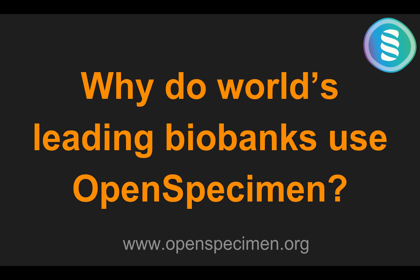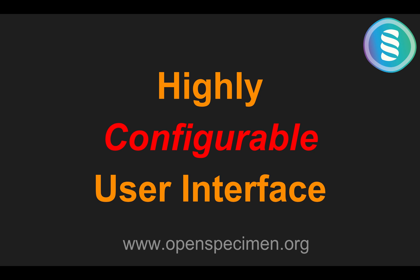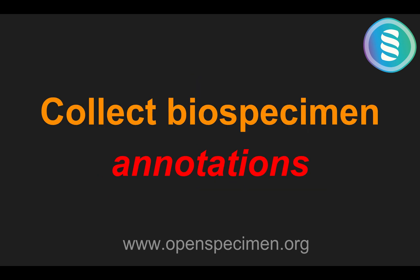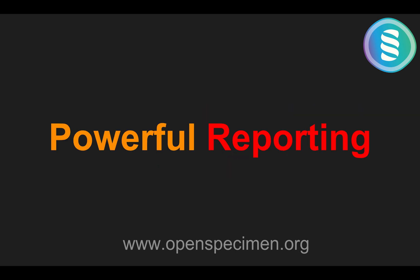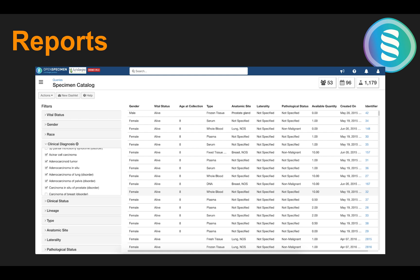Let us look at the key benefits of using OpenSpecimen. First, it's highly configurable. Based on the workflows of the biobank, it can be configured as to what fields are needed during data entry and how the system needs to navigate. It allows you to track high quality annotations. It comes with a basic data model and you can add any custom annotations. It is very easy to pull data out of the system using the powerful reporting module. As you see here, it's a screenshot of the results view where you can filter based on different fields easily and look at the results.